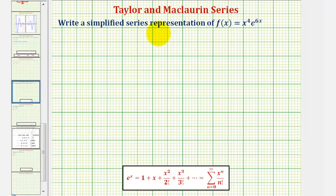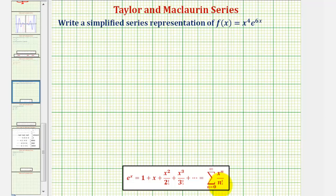We're asked to write the simplified series representation of the function f of x equals x to the fourth times e raised to the power of six x. We can do this using the known power series for e raised to the power of x given here, where e to the x is equal to the summation from n equals zero to infinity of x to the nth divided by n factorial.